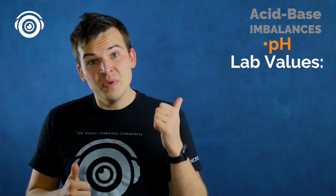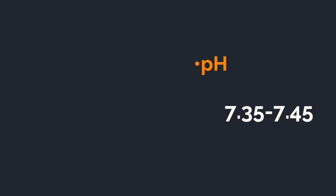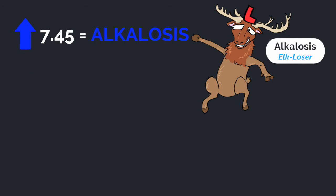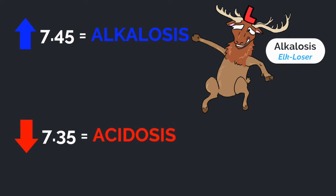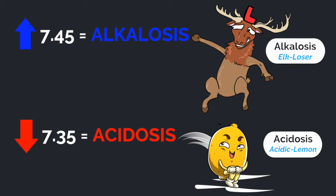The lab values we're going to talk about are pH, CO2, and bicarb, or HCO3. The normal pH of blood is 7.35 to 7.45 — that's the normal range. Below that is acid and above that is alkaline. If pH is up, that's alkalosis. If pH is down, or less than 7.35, that's acidosis.